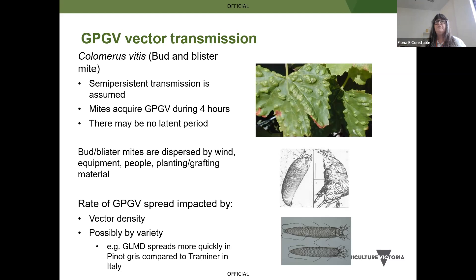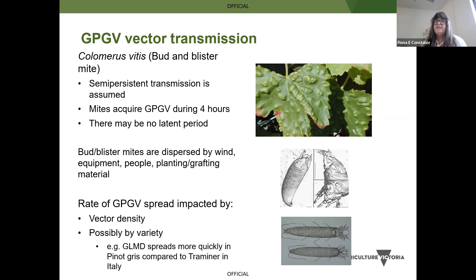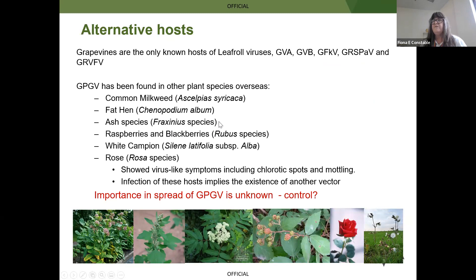It's really important to maintain control if you think you've got GPGV in your vineyard, particularly as we still don't fully understand the problems associated with this virus. GPGV has alternative hosts recorded overseas — you can see a list of the species reported, though we've not yet found them in alternative hosts in Australia. The good news is that all the other viruses — the leaf roll viruses, GVA, GVB, FLEC and rupestris stem pitting virus — don't seem to have alternative hosts; they're quite strict to grapevine.